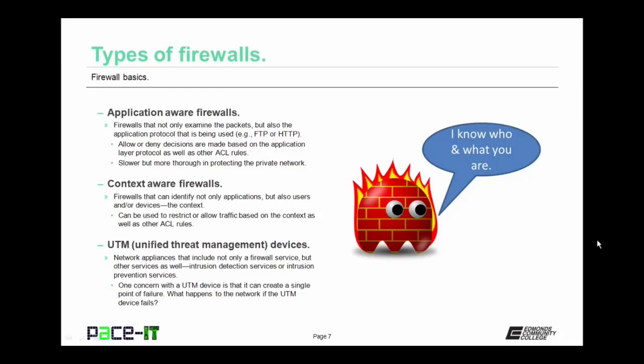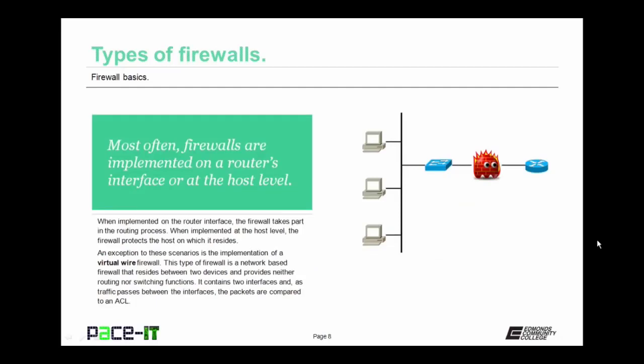Then there are unified threat management devices, or UTM devices. These are network appliances that include not only a firewall service but other services as well — usually intrusion detection services or intrusion prevention services. One concern with a UTM device is that it can create a single point of failure in the network. Most often firewalls are implemented on a router's interface or at the host level. There is an exception: the virtual wire firewall. This type of firewall is a network-based firewall that resides between two devices and provides neither routing nor switching functions. It contains two interfaces and as traffic passes between those interfaces, the packets are compared to an ACL.